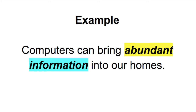Let's look at 'homes.' Do we have an adjective telling what kind of home, how many homes, or which home? No. We do have the possessive pronoun 'our' before it, but that's not an adjective. Now let's look at 'information.' Do we have an adjective describing what kind of information? We do — abundant information. What kind of information? Abundant.